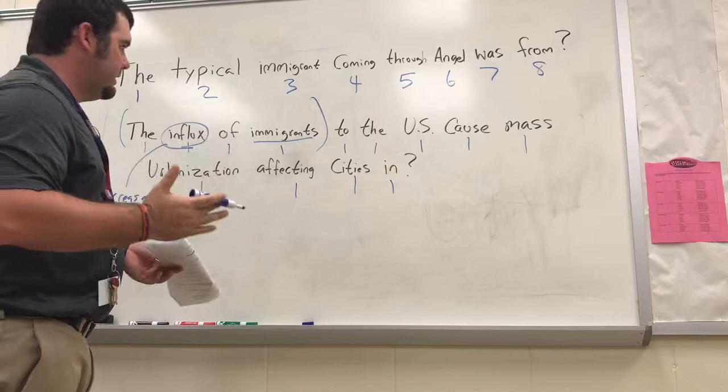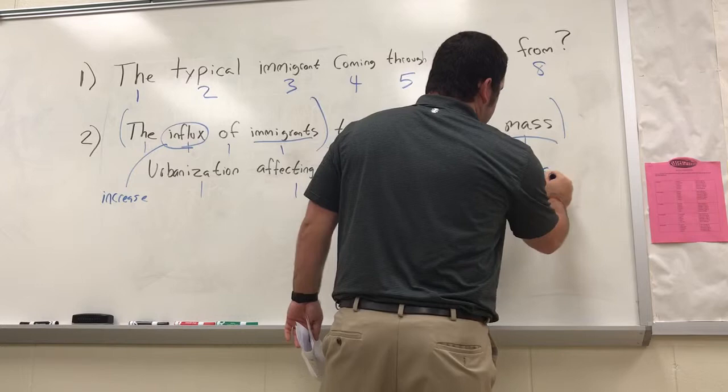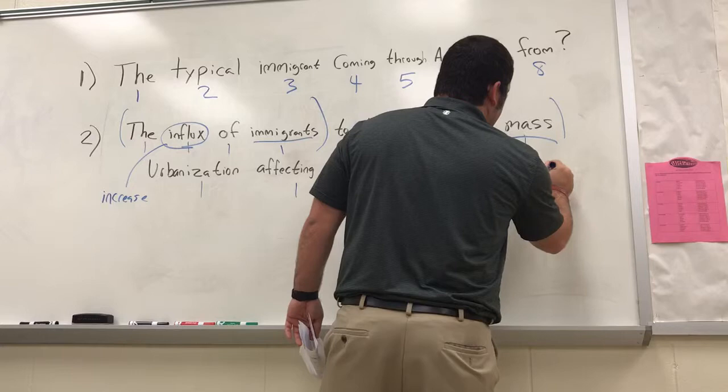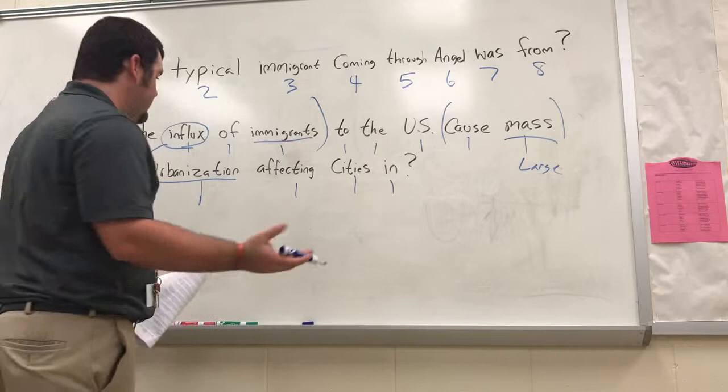'Immigrants' — students know what that means: people coming to the United States. 'Cause mass' — 'mass' means large. 'Urbanization' — we've looked at that in class; it just means the rapid movement to cities, so moving to cities.